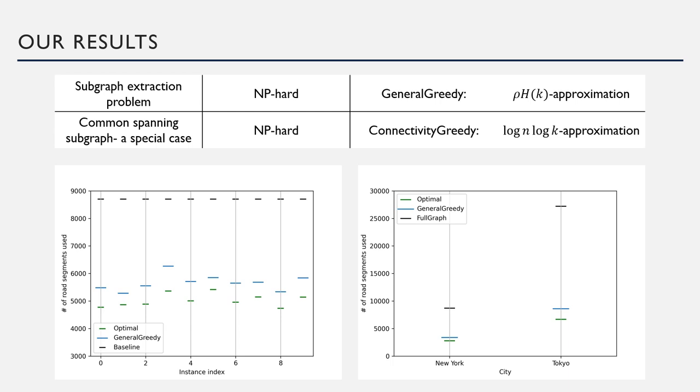For the common spanning subgraph problem, we proposed another alternative greedy approach which we called ConnectivityGreedy and showed that the approximation is log n log k where n is the number of vertices and k is the number of constraints.